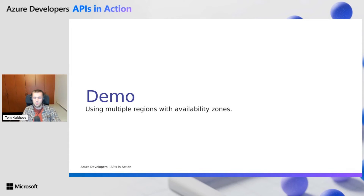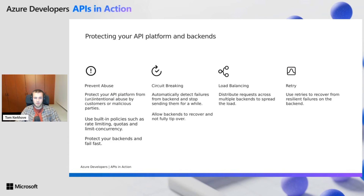So we've seen how we can use multiple regions, how we can autoscale to make sure you have the capacity, how we can use availability zones to make sure that the compute is spread across the data centers in the region, and how you can use Application Insights to monitor your traffic pattern. Now let's look at the application side of things and how to protect your backends to make sure you are not overwhelming them.